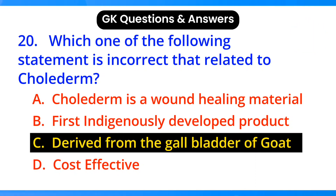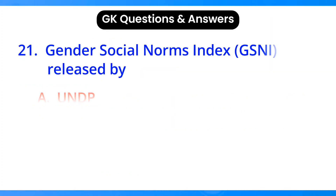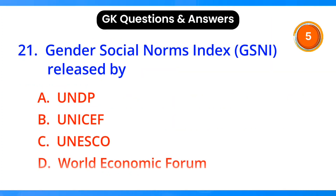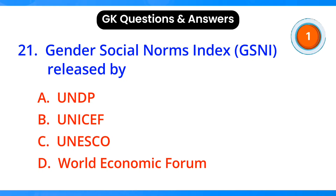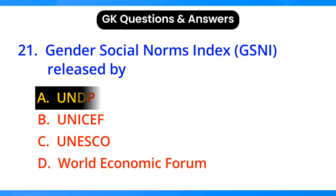Which one of the following statements is incorrect related to colostrum? Answer: option C, derived from the gall bladder of cows. The Gender Social Norms Index was released by which organization? Answer: option A, UNDP.